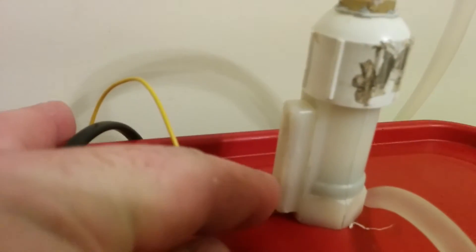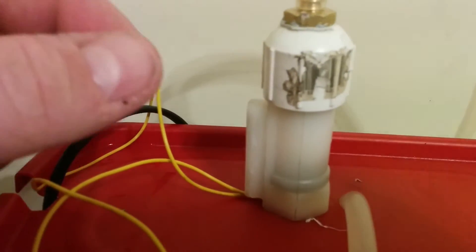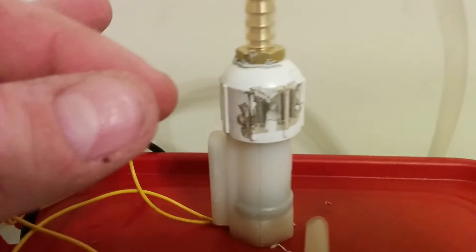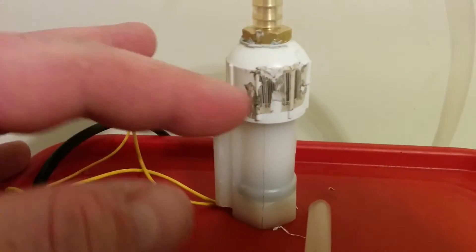You might be able to see the reed sensors right here. There's a spring, and basically, there's a little piece of plastic. And when it's pushed down from the flow of the water, the reed sensor opens up.